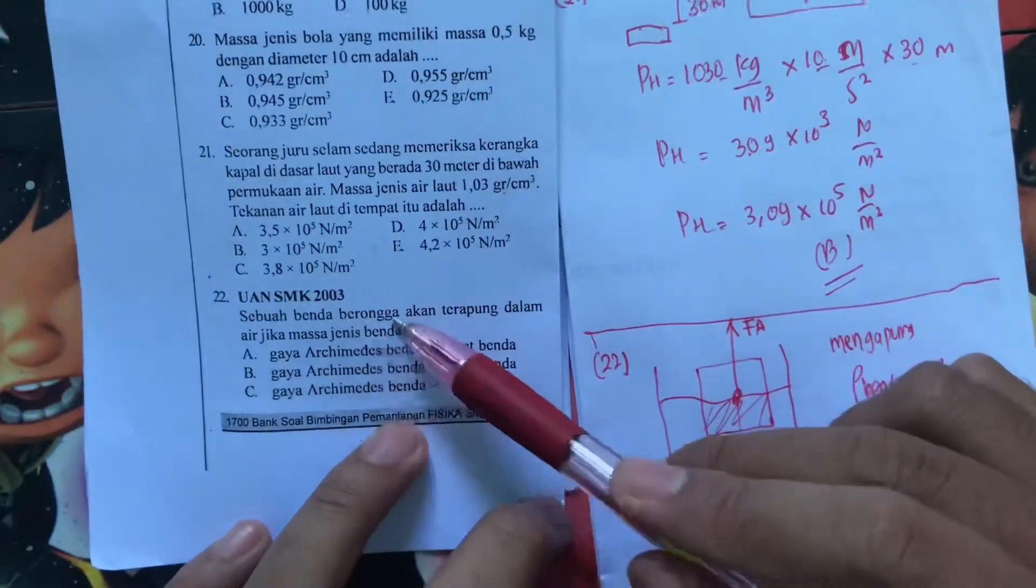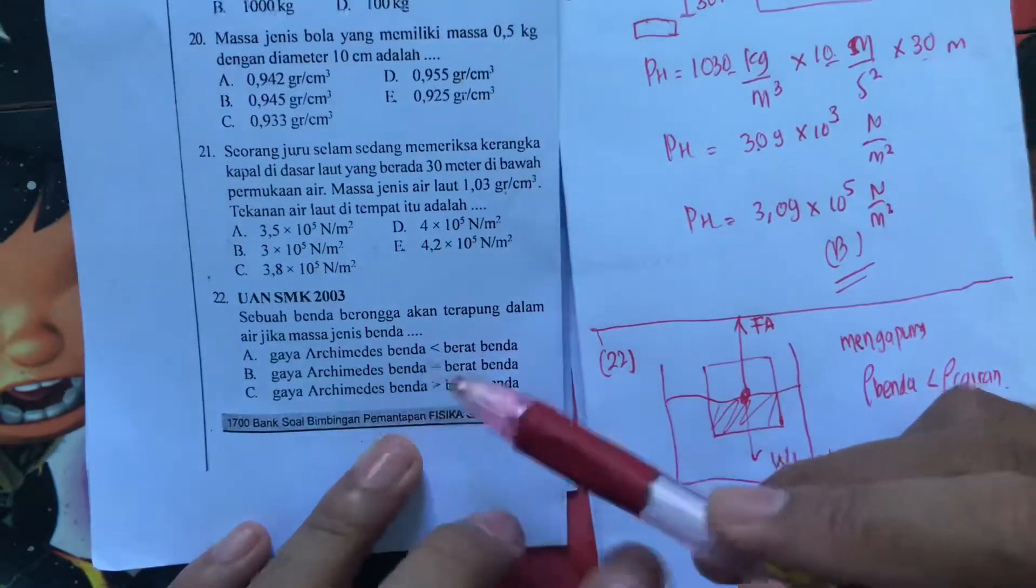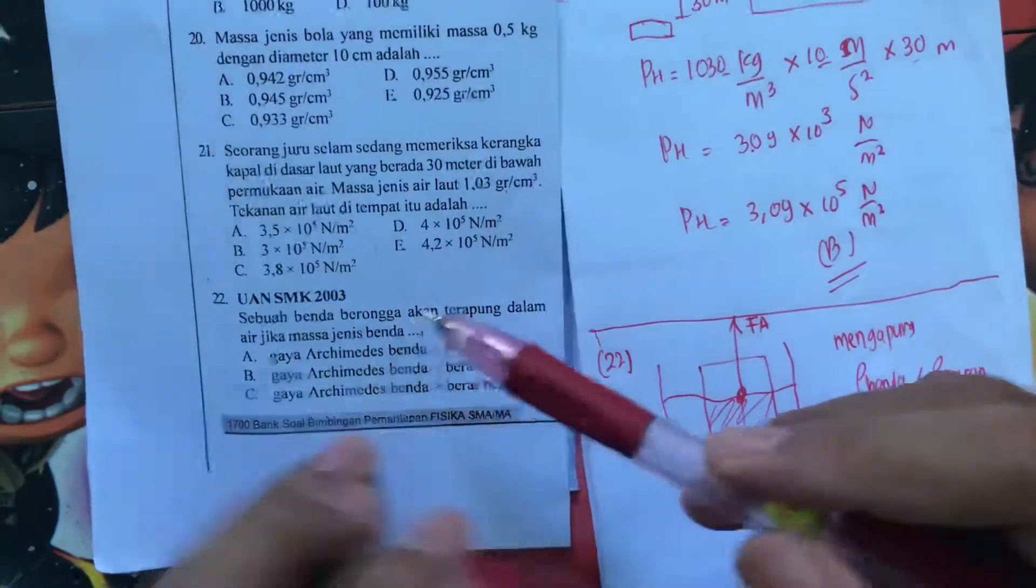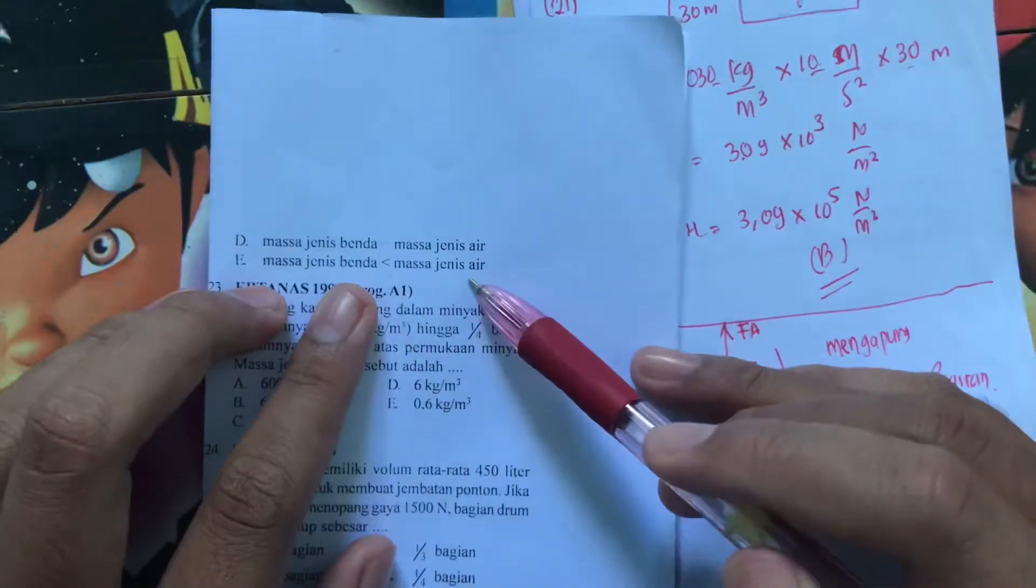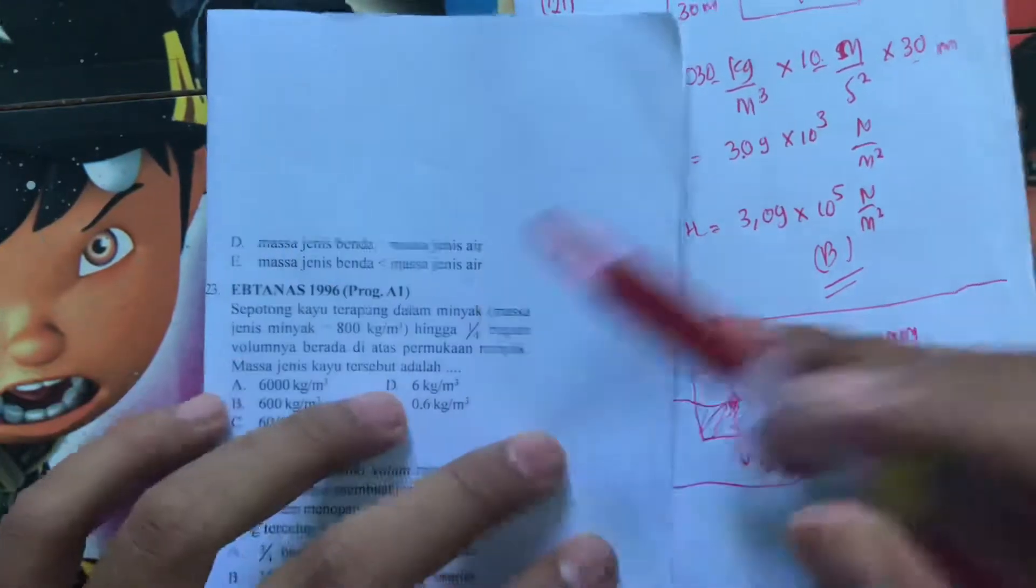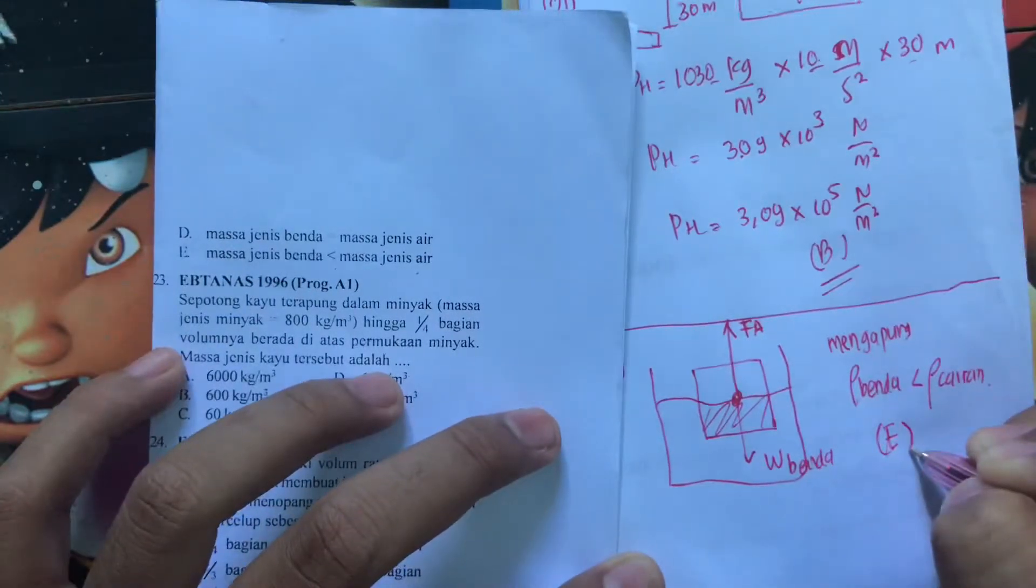Tapi jawabannya yang mana? Sebuah benda berongga akan terapung dalam air jika masa jenis benda. Kata kuncinya masa jenis benda. Kita cek untuk yang D dan E. Berarti jawabannya kurang dari masa jenis air. Berarti jawabannya adalah yang E untuk kasus ini. Rho benda kurang dari rho air.